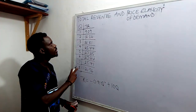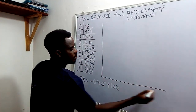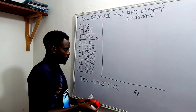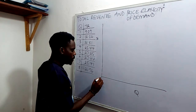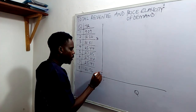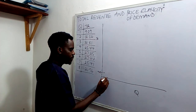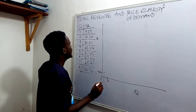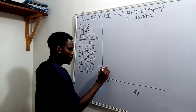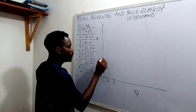The graphical illustration between total revenue and quantity is expressed as follows. This is our quantity axis, this is the total revenue axis, and the origin. When Q is 1, total revenue is 9.09. When Q is 2, total revenue is 16.36. When Q is 3, total revenue is 21.81.